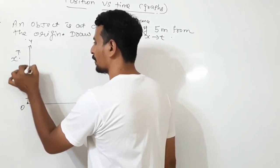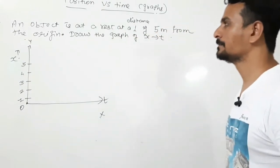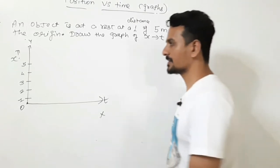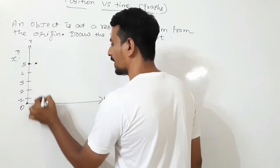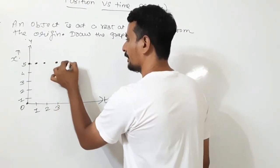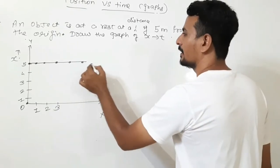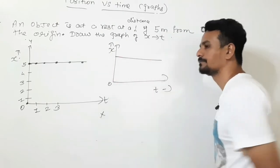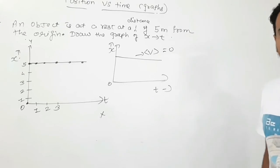The object is at a distance of 5 meters — I am not drawing the graph to scale — so this is 1, 2, 3, 4, 5. The object is at rest, meaning it is not performing any kind of motion. So after 1 second the object is still at 5 meters, after 2 seconds it is at the same position, after 3, 4, 5 seconds it stays at the same place. Join these points. The graph of x vs t will be parallel to the time axis when the object is at rest.